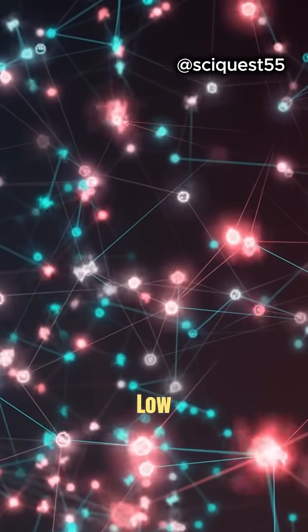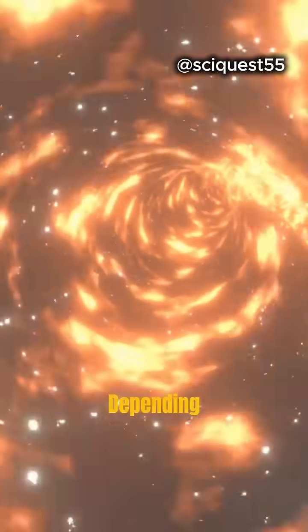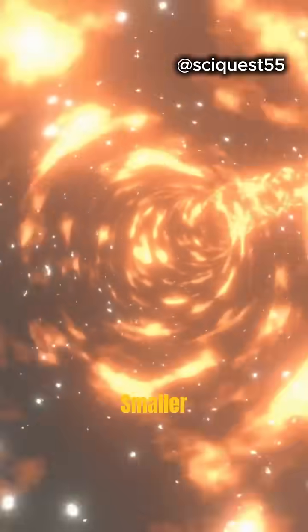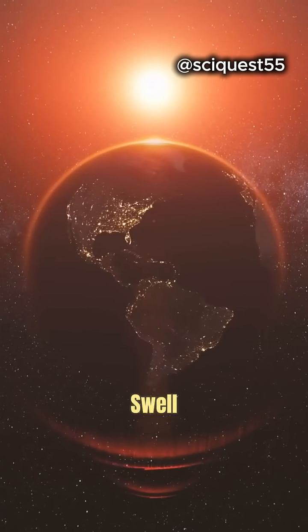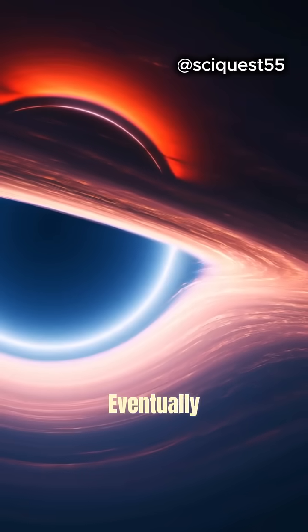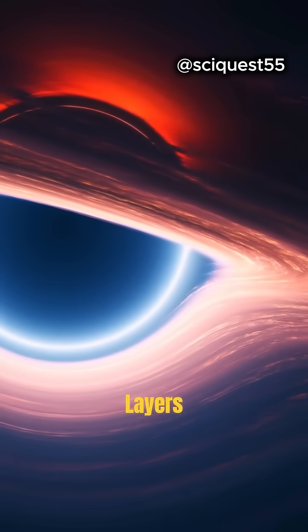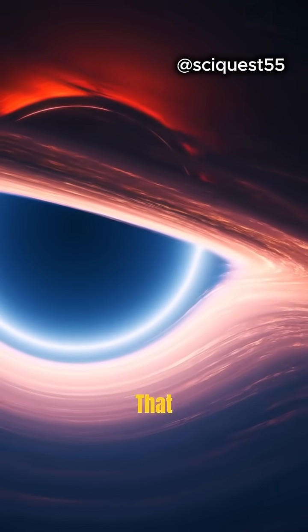When the hydrogen supply runs low, the star evolves depending on its mass. Smaller stars, like our Sun, swell into red giants and eventually shed their outer layers, leaving behind a white dwarf that cools over time.